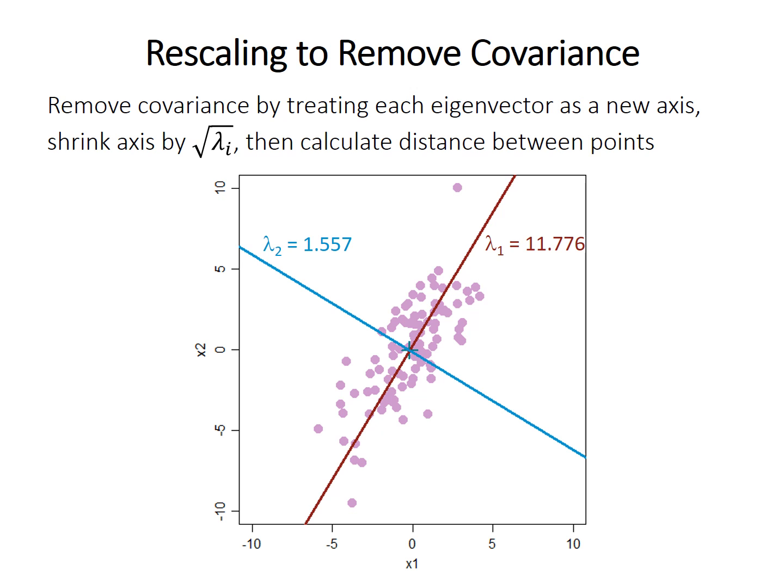This is how we use the eigenvectors and eigenvalues to remove covariance. The technique treats each eigenvector as a new axis. Instead of having x1 and x2, we rotate this graph so the two eigenvectors become the new axes. Then we shrink the data along each axis by the square root of the eigenvalue. We shrink along the red axis quite a lot because the eigenvalue is big.